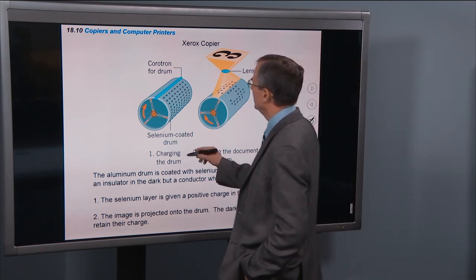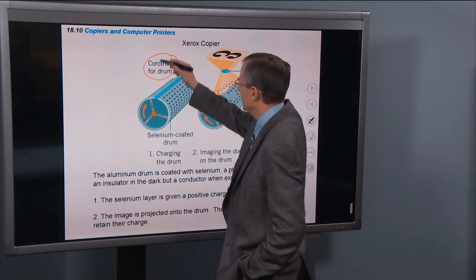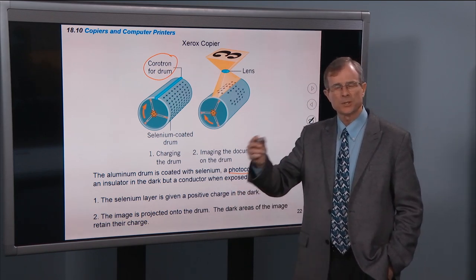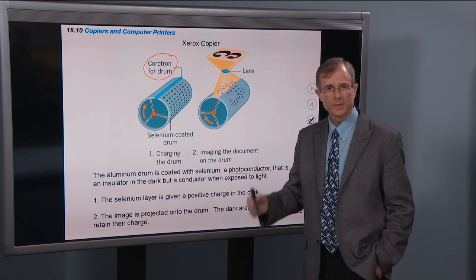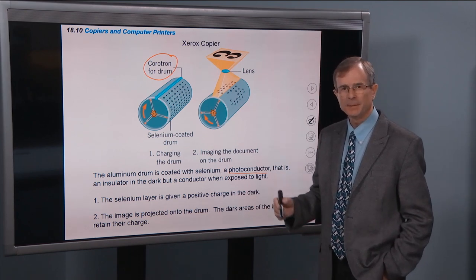So that offers an opportunity for selectively charging the drum and attracting the toner. And the way that it works first is, there's something called a corotron that charges up, puts a positive charge on the entire surface of the drum, selenium coated drum.